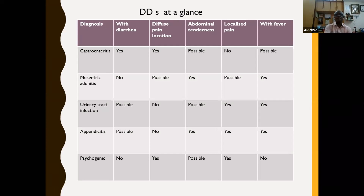Common differential diagnoses to compare: gastroenteritis — diffuse pain, no localized pain, fever, and diarrhea. Mesenteric adenitis — fever and abdominal tenderness, no diarrhea. Urinary tract infection — fever and localized pain, diarrhea may be present. Appendicitis — abdominal tenderness, localized pain, fever, and possibly a small amount of diarrhea. Psychogenic — no fever, may have localized or diffuse pain.